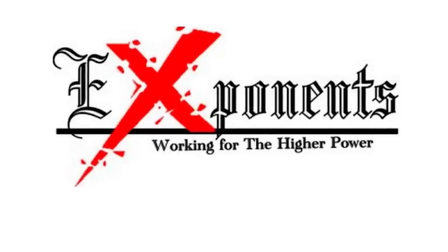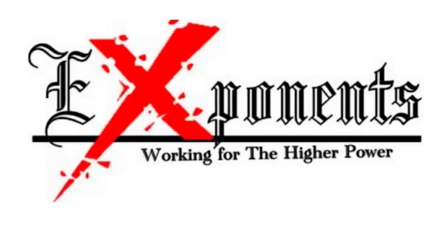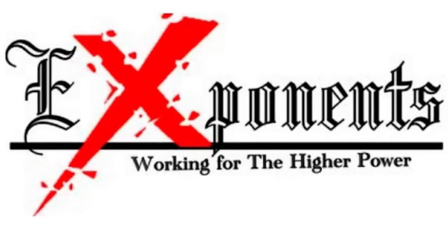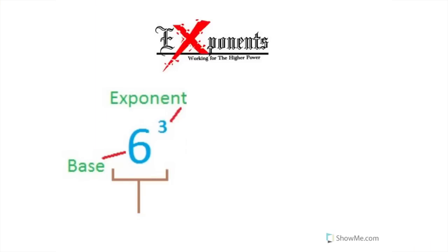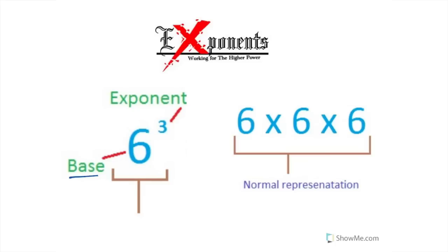Let's start off with: what is an exponent? The exponent of a number says how many times to use the base. In this example I have six to the third power. The exponent is the three and the base is the six. The exponent tells the base how many times to use it. In this case, six to the third power means you're going to see the base three times — so six times six times six.